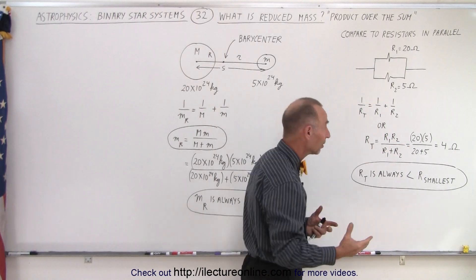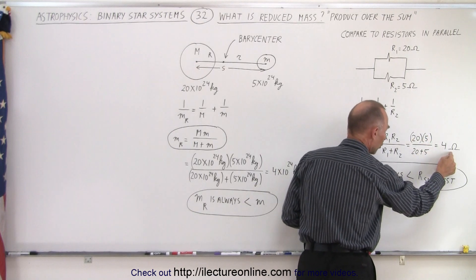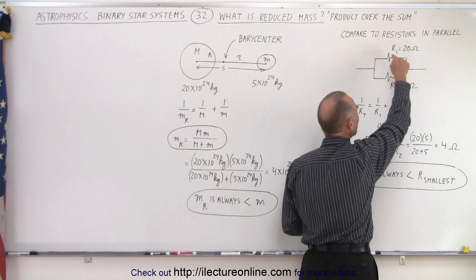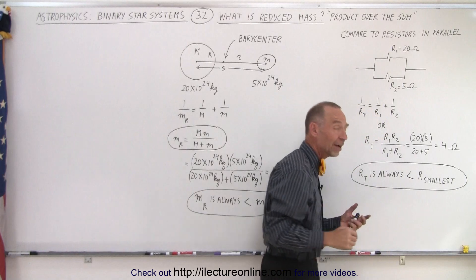So if we calculate the product over the sum we have a hundred divided by 25 which is four ohms and notice that the result of that is always going to be less than the smaller of the two resistors. In this case four is always going to be less than five.